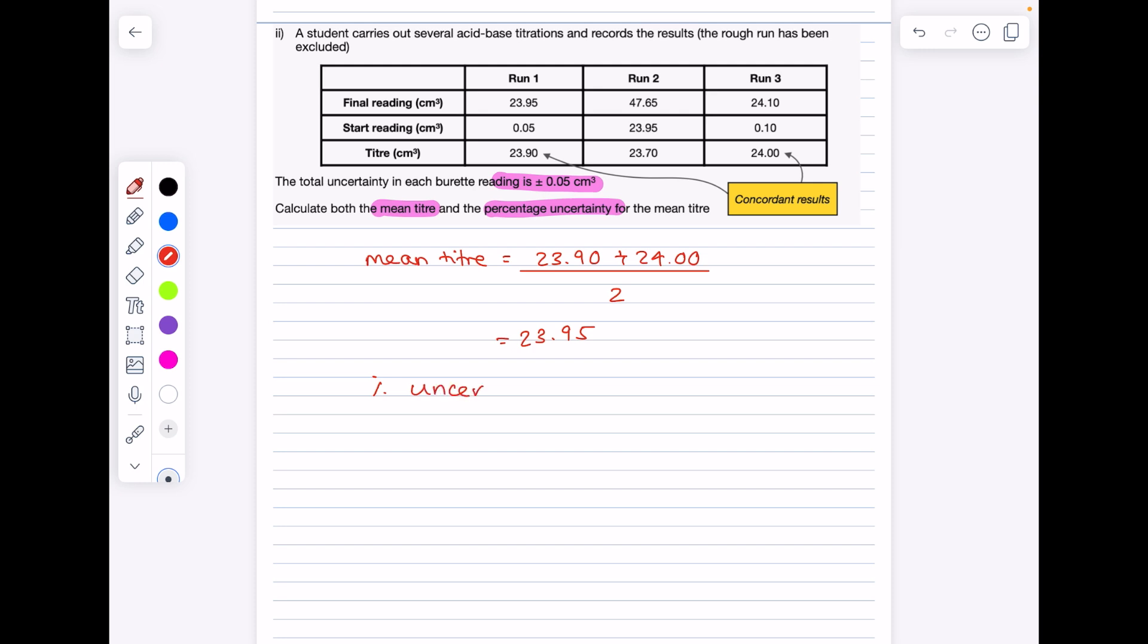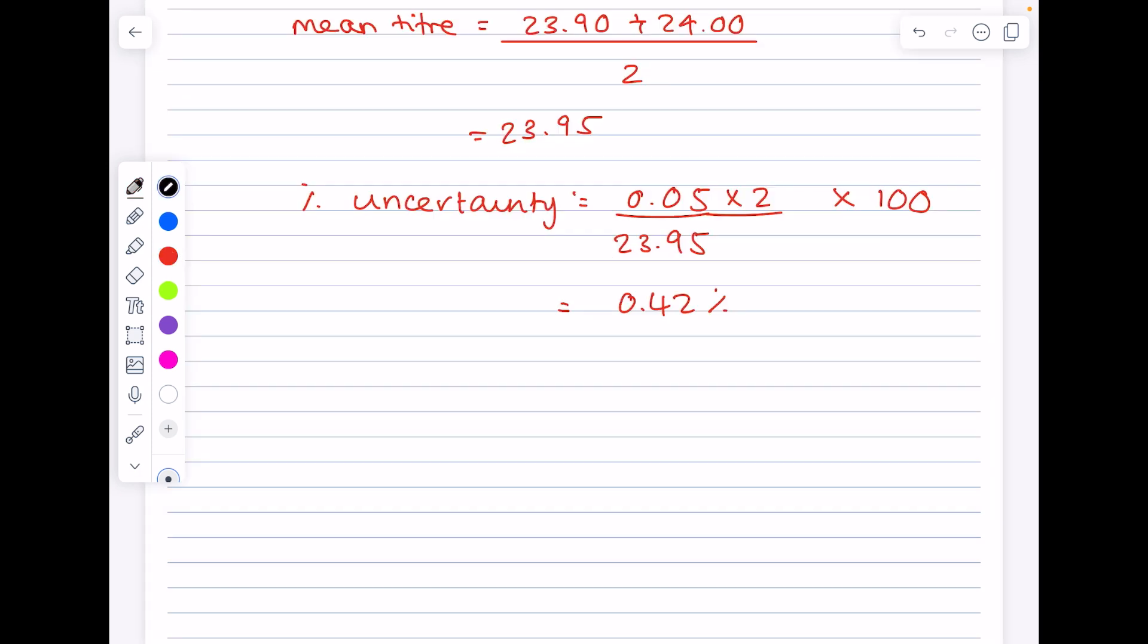And then to find our percentage uncertainty, we do our uncertainty which we've been told is 0.05 divided by our measured volume. Just be a little bit careful, remember we took two readings which is why we need to multiply that uncertainty by two, and then times by 100 to find the percentage. So our final answer is 0.42 percent.